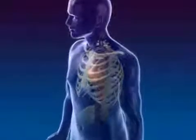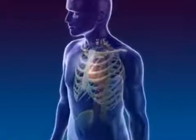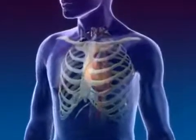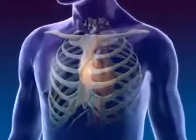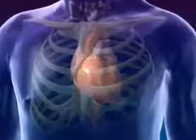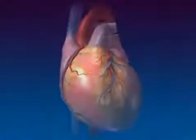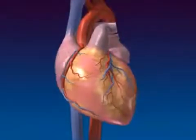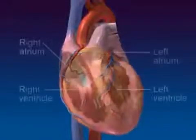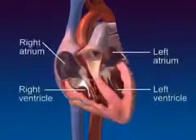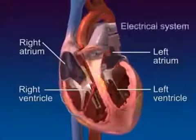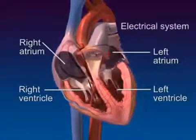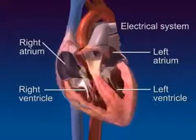The heart generates pressure gradients that drive blood flow through the vascular system. Although the heart appears to be a single structure, it is divided by a central septum into two separate pumps, each consisting of two chambers — the atrium and the ventricle — that alternately contract and empty during systole, then relax and fill during diastole.